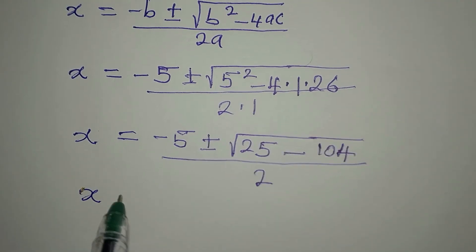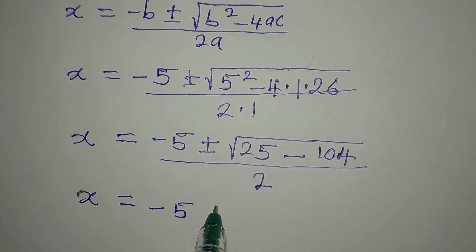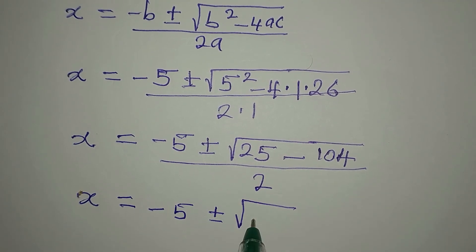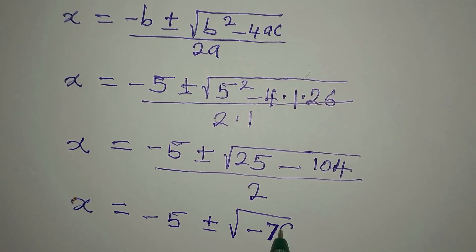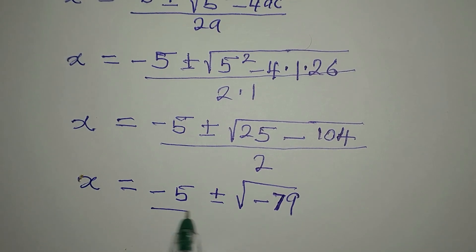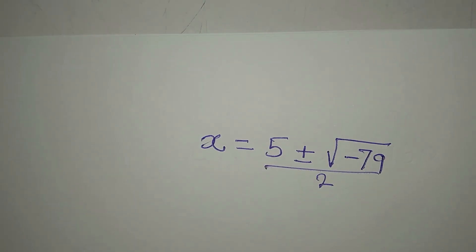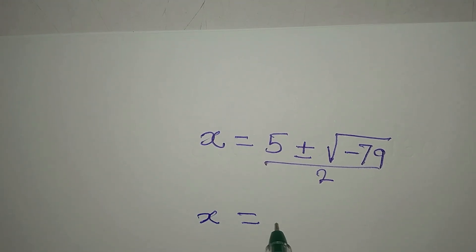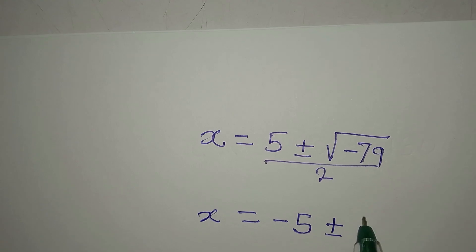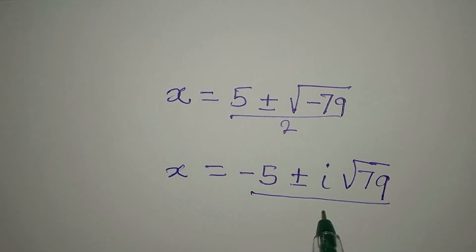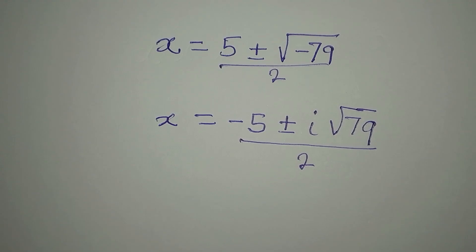So our x will now be minus 5 plus or minus square root of 25 minus 104, which is minus 79. So we divide this by 2. This negative under the square root will give us i, because square root of negative 1 is i. Then we have root 79. I don't want us to have decimals so let's leave it at that. Then we divide by 2.